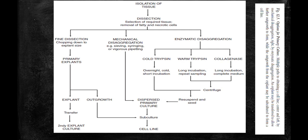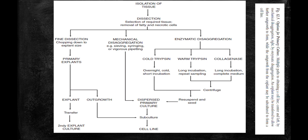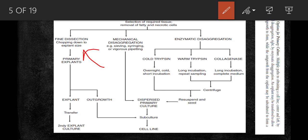There is a whole chart covering the primary culture process. First, isolate the tissues, then disaggregate by removing fat and necrotic cells. Dissection can be done by three methods: fine dissection, mechanical dissection, and enzymatic dissection. In fine dissection, you have what is called primary explant — reducing the explant size, which is referred to as the primary explant.